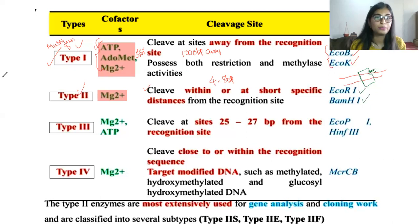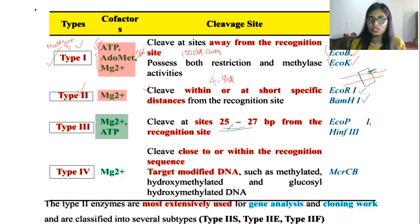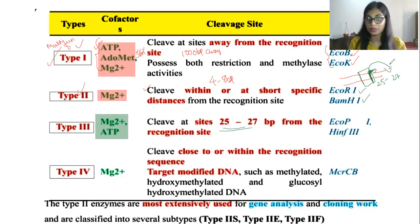Type three restriction endonucleases have two cofactors: magnesium and ATP. They cleave at sites 25 to 27 base pairs from the recognition site. Compared to type two which recognizes four to eight base pairs, type three has the capacity to cleave at a distance of 25 to 27 base pairs from the recognition site. Examples for this type three restriction endonuclease are EcoP1 and HinfI.